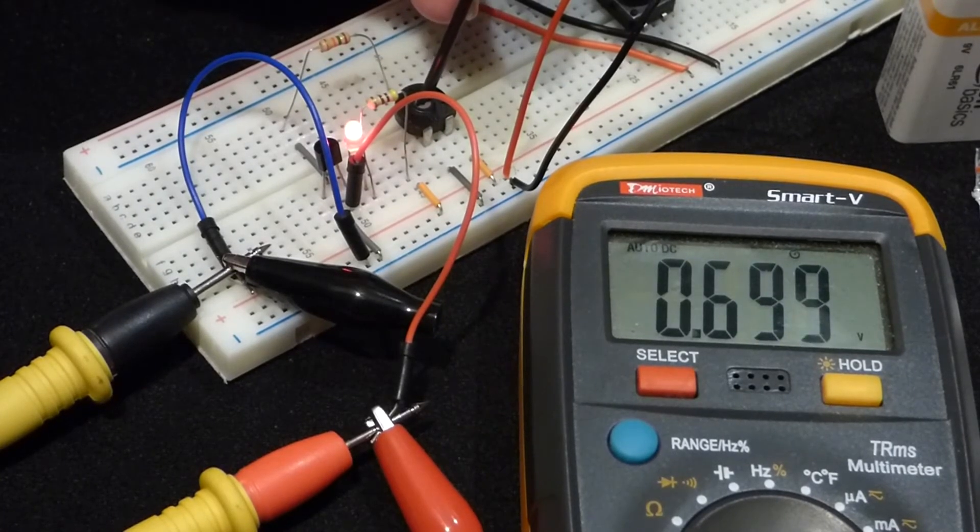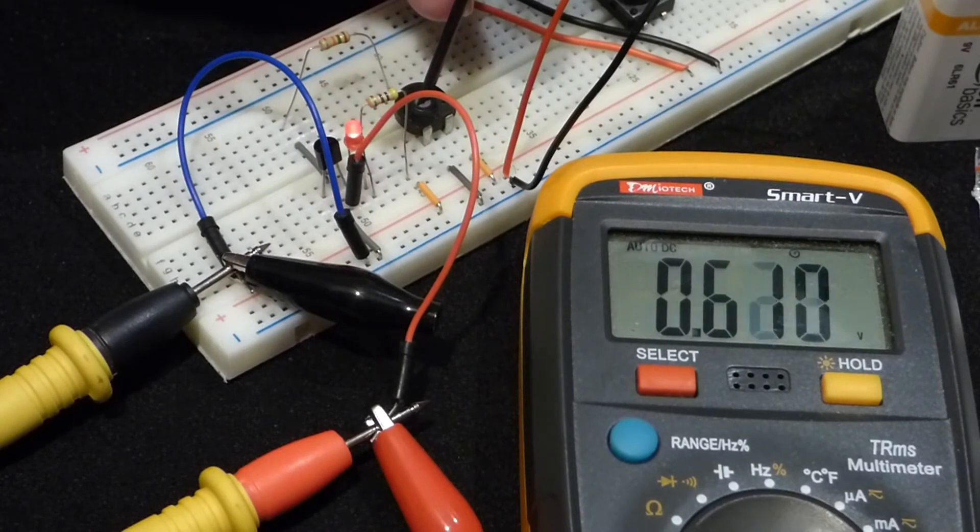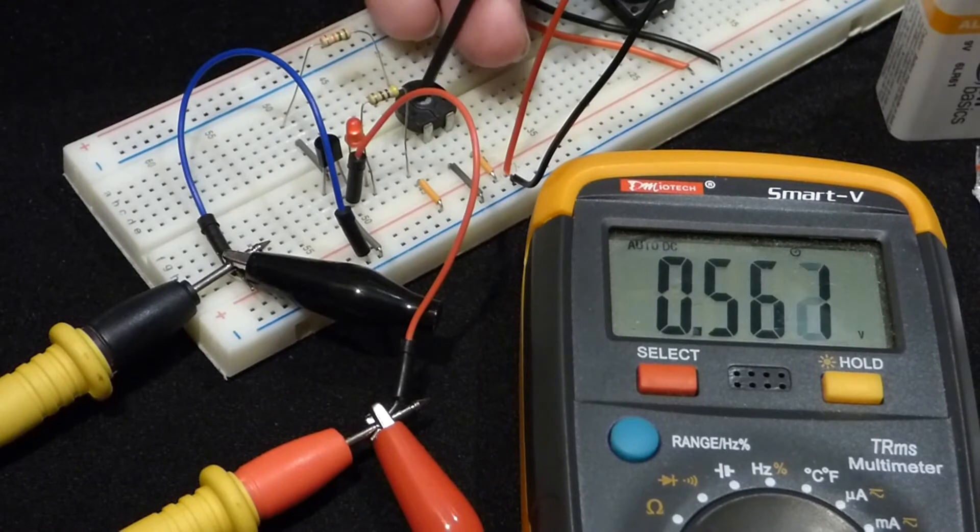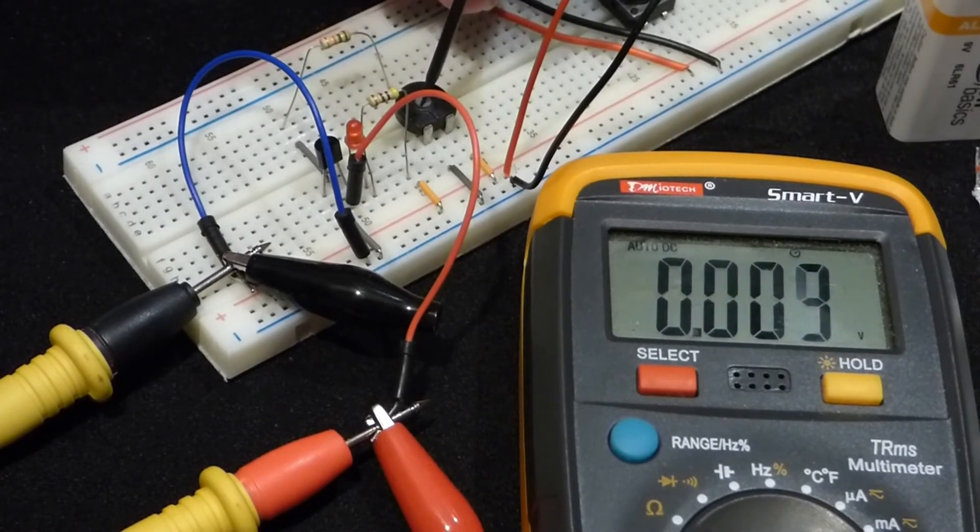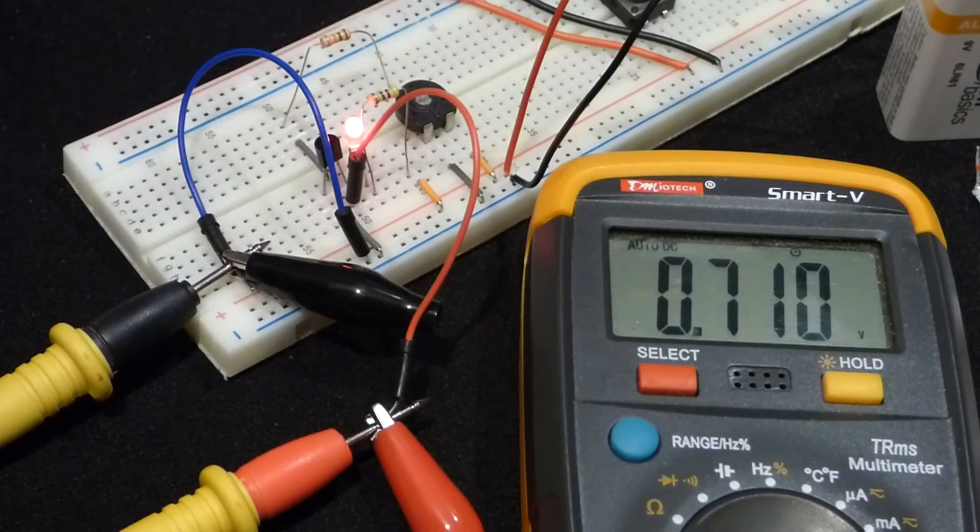The transistor can turn on and start doing things. So that's really the only concern about the voltage at the base. Is getting enough voltage for the transistor to even turn on to begin with. After that it's all about current for the most part.